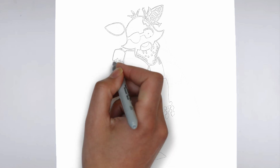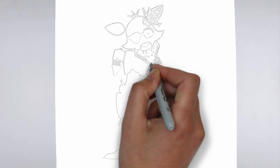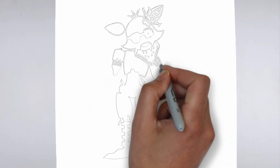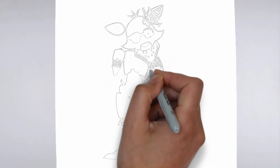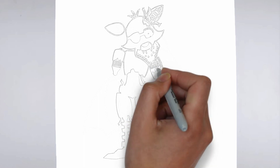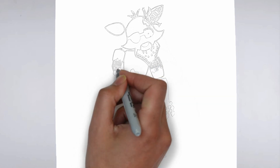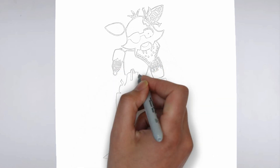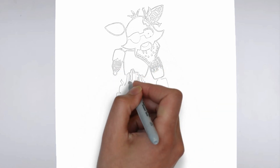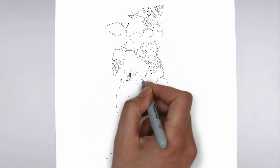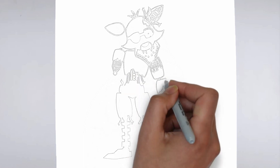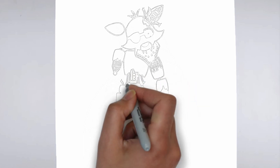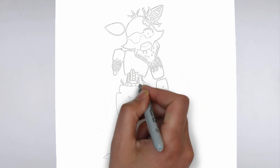Now it's time to shade your drawing. Start by identifying the light source in your reference image or object and use that as a guide for where to add shadows and highlights. Build up the shading gradually, using a variety of pencil pressures and techniques to create depth and texture.